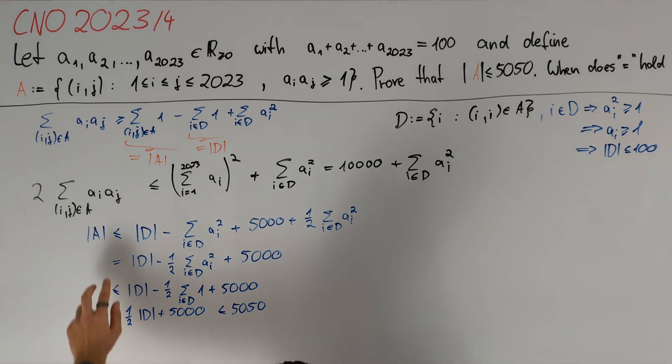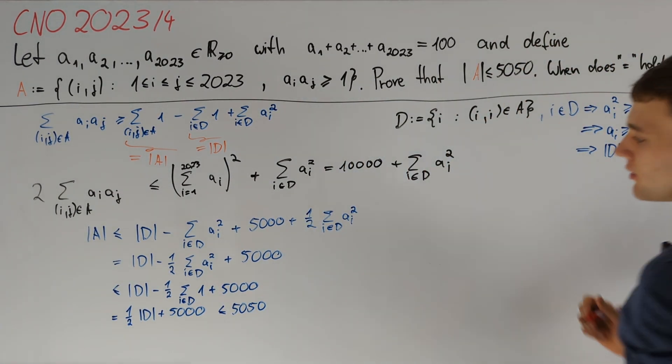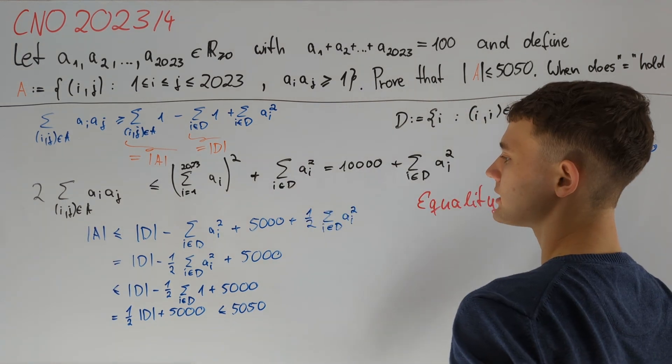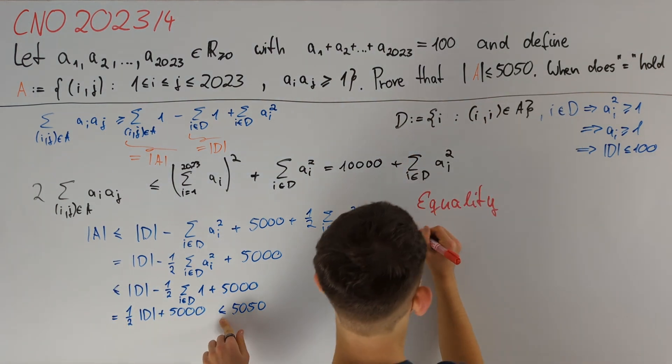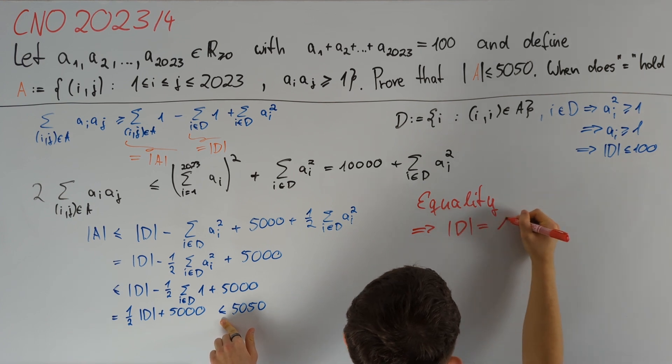Let's finish by finding the cases where the cardinality of A is equal to 5050. So let us assume that we have equality. Hence we must have equality in every step here. In particular, this implies that the cardinality of d is equal to 100.